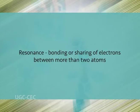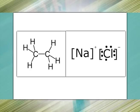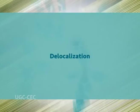Resonance may be defined as the bonding or sharing of electrons between more than two atoms. Typical covalent and ionic bonding involves sharing or transferring of electron pairs between two atoms, as in ethane and sodium chloride respectively, where bonding electrons are localized. Resonance differs in that it involves the sharing of electrons between more than two atoms via delocalization.